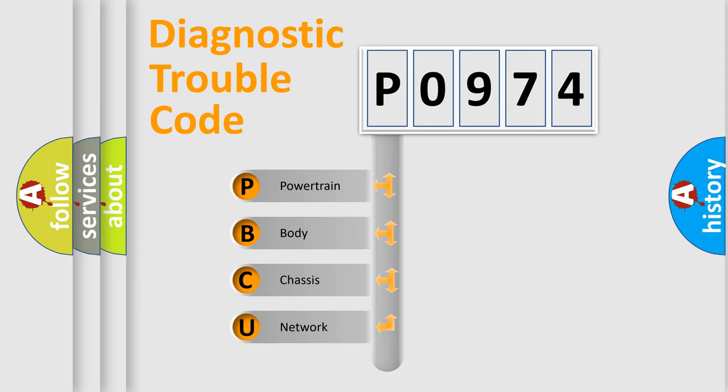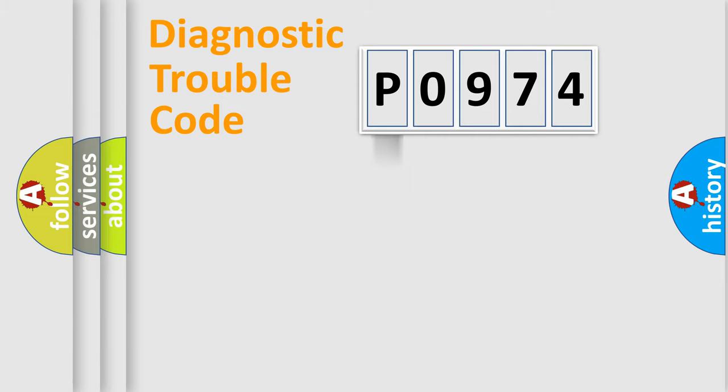We divide the electrical system of the automobile into four basic units: Powertrain, Body, Chassis, and Network. This distribution is defined in the first character code.